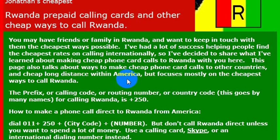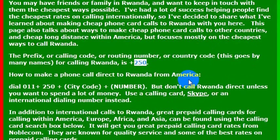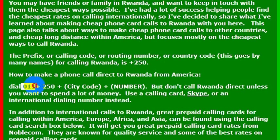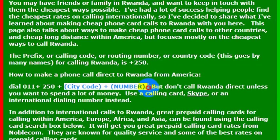So when I'm ready to make a phone call there to make travel arrangements, I want to know the country code for Rwanda. The country code is 250. If you want to call Rwanda directly from a landline in the United States, you would dial 011, which gets you out to an international line, and then 250, which is the country code for Rwanda, then the phone number you want to reach.